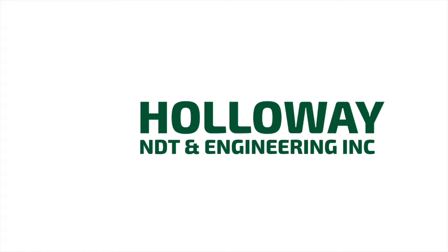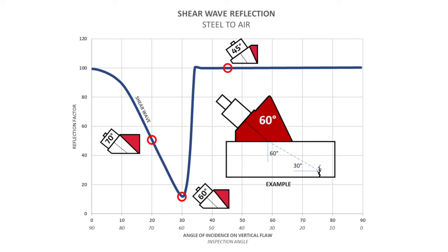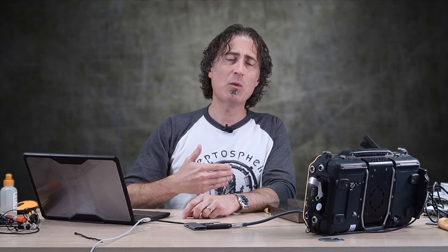Mode conversions — what are they and why do we care? During your time as a level 2, you may have come across a picture that looks like this. This is from the Kraut-Kramer book. This is a graph of what happens when you impart sound in a shear wave on a vertical surface.